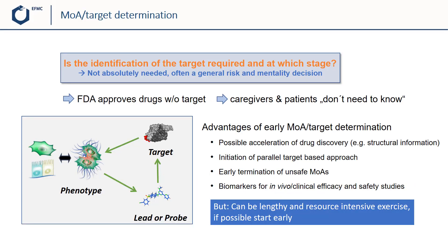Already in the introduction you have learned that phenotypic screens may be more likely to deliver compounds with relevant modes of action. However, cell-based screening approaches do not directly reveal the cellular targets. It is not absolutely necessary and basically more of a risk and mentality decision to elucidate the target of a phenotypic drug, since the FDA also approved drugs without knowledge about the target. In the end, the patient appreciates a safe and efficacious drug more over one for which the target is known.